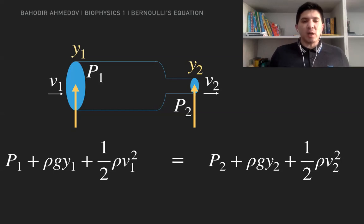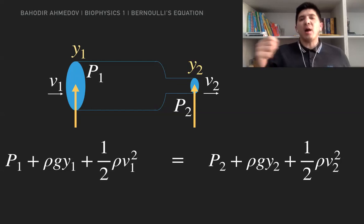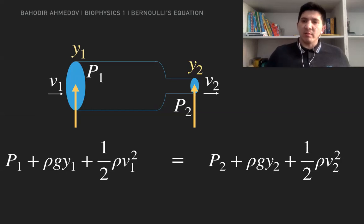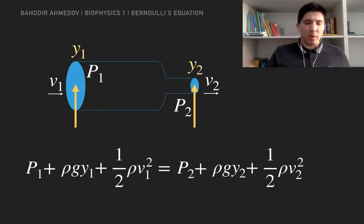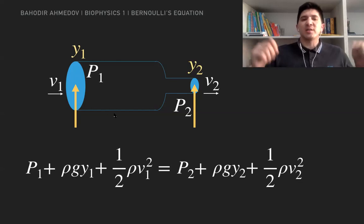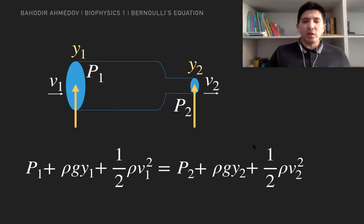At the same time, the Bernoulli equation reveals the connection between three physical quantities: velocity, pressure, and height. Basically, if I increase the velocity, how much is the pressure going to change? Let's say I've got a tube where the heights of the fluid are going to be the same — basically y1 equals y2. I'm going to use the Bernoulli equation to understand how velocity changes the pressure.